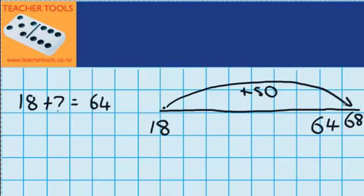Now you can see I jumped up 50 to get to 68, which unfortunately was a little bit too far. So now I need to fix that up by jumping back a little bit to get to 64. So that means I need to jump back 4.